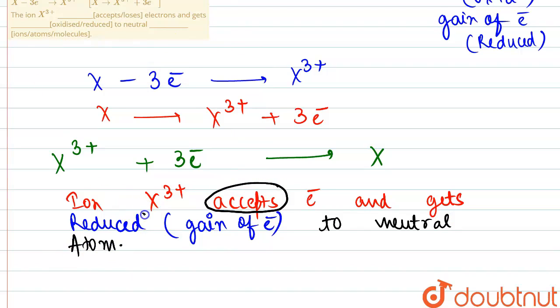So the correct answer here will be: X3+ accepts the electron, it is getting reduced, and the last part corresponds to atom. Thank you.